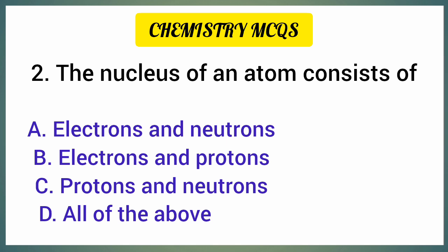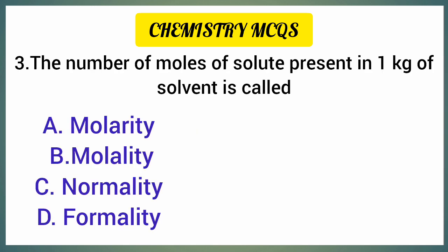The nucleus of an atom consists of — correct option is option C: Protons and neutrons.